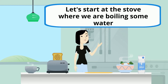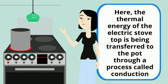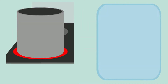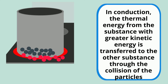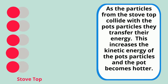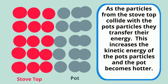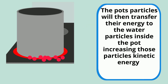Let's start at the stove where we are boiling some water. The thermal energy of the electric stove top is being transferred to the pot through a process called conduction. In conduction, the thermal energy from the substance with the greater kinetic energy is transferred to the other substance through the collision of the particles. As the particles from the stove top collide with the pot's particles, they transfer their energy. This increases the kinetic energy of the pot's particles and the pot becomes hotter. The pot's particles will then transfer their energy to the water particles inside the pot, increasing those particles' kinetic energy.